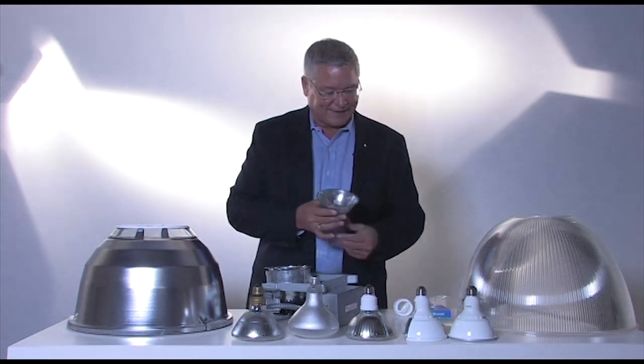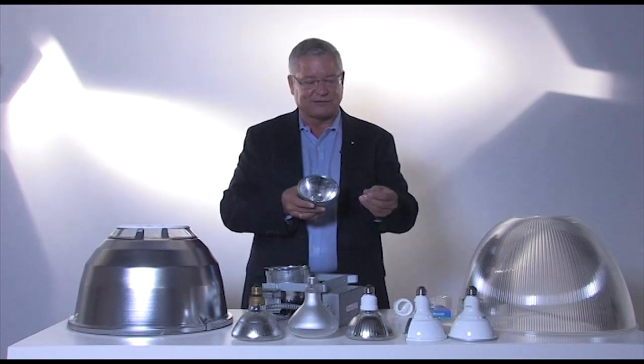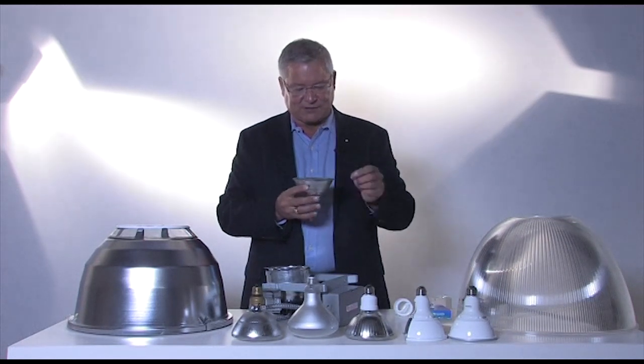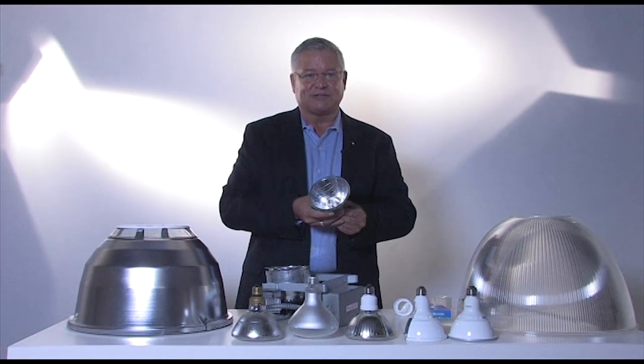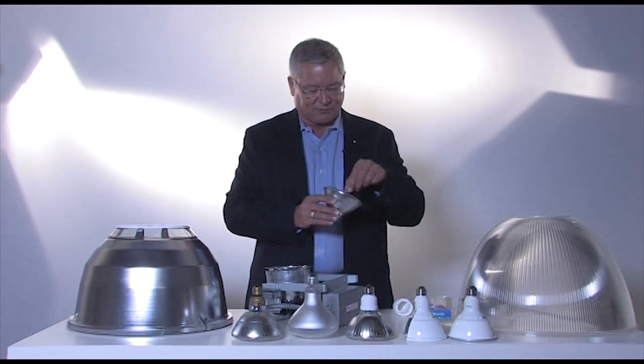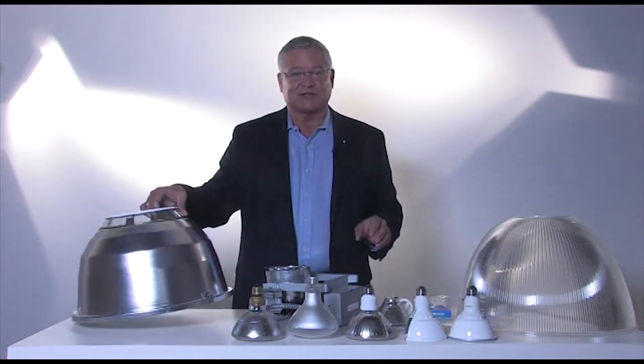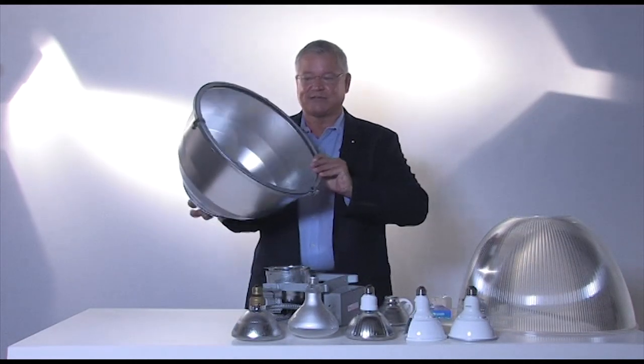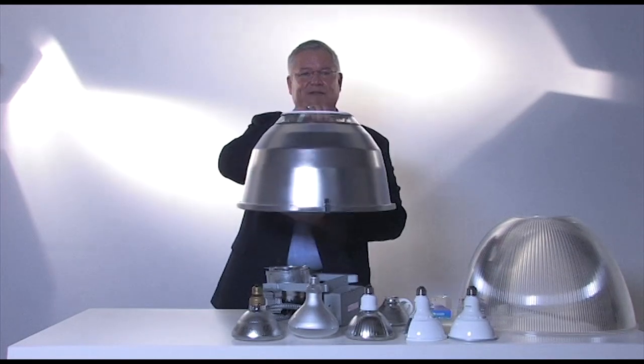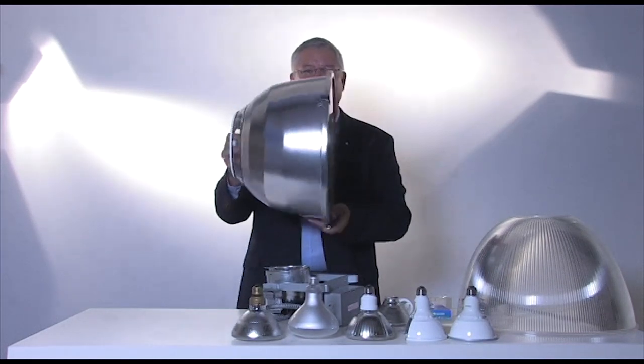When I introduce a light source into that reflector, then, I actually start to put into focus exactly where the light needs to go. This is part of the control mechanism. We can do that on a much larger scale, such as with an industrial fixture, as we see here. And again, the contour of the metal is going to determine what direction the light goes,